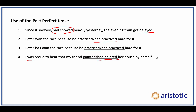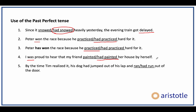What if there are three events in the past at three different time periods? Here's the sentence: 'By the time Tim realized it, his dog had jumped out of his lap and ran / had run out of the door.' The earliest event is the dog jumping out; the second is the dog running out; the third is Tim realizing it. 'Realized' is simple past — the most recent item. Everything else will be past perfect: 'had jumped' and 'had run.' When you have three or more events at different times in the past, the most recent one is simple past and everything else is past perfect.